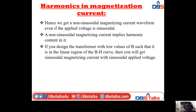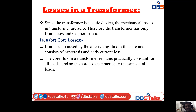If you design the transformer with low values of B such that it is in the linear region of the BH curve, then you will get sinusoidal magnetizing current with sinusoidal applied voltage. That is how we eliminate harmonics in the magnetizing current. This is the concept of harmonic magnetizing current. Next we will move to the losses in the transformer.